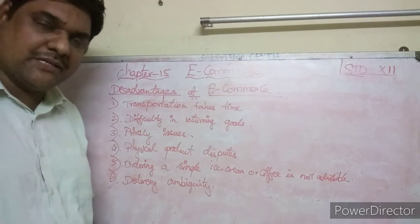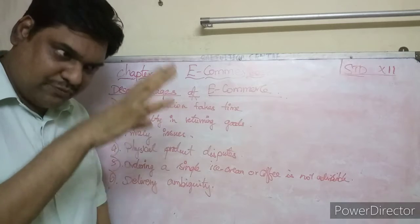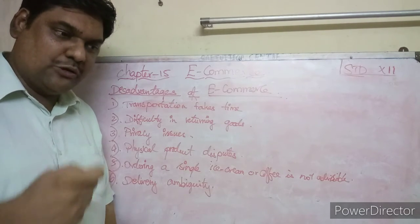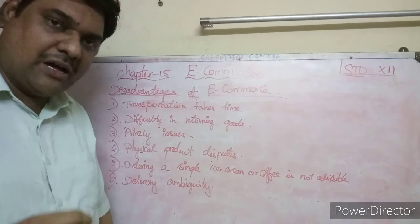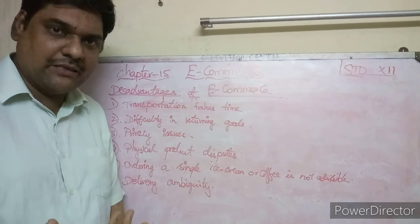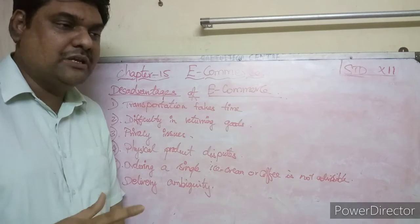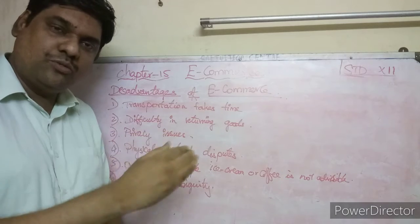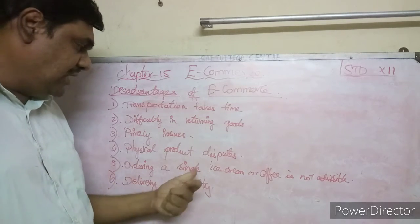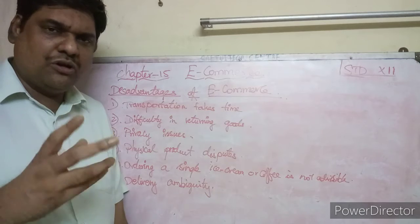The fourth disadvantage is physical product dispute. Online, you see photos of the product, but the actual item delivered may be different. You cannot touch, feel, or check the product before buying. For example, when ordering dresses online, the color you see on screen may look different in person. Also, ordering a single small item like an ice cream or coffee is not advisable online because the delivery cost makes it too expensive.